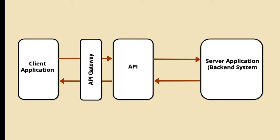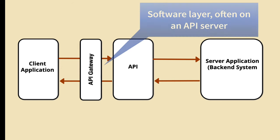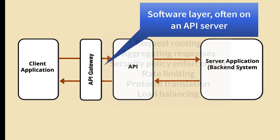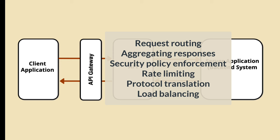Additionally, implementing API gateways can provide an extra layer of security by managing and monitoring API traffic. An API gateway is a software layer that acts as a middleman between clients and backend services in a distributed software architecture. It's a single entry point for API calls, and it performs a number of tasks including routing requests to the appropriate services, collecting responses from multiple services and combining them into a single response for the client, enforcing security policies such as authentication, authorization and access control, managing rate limiting, translating protocols, and performing load balancing.